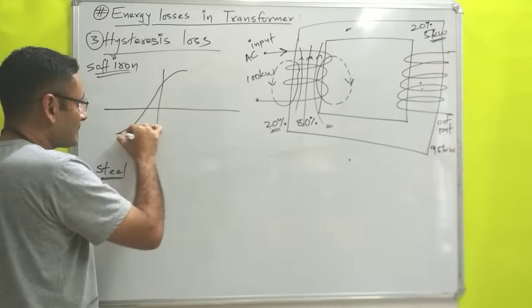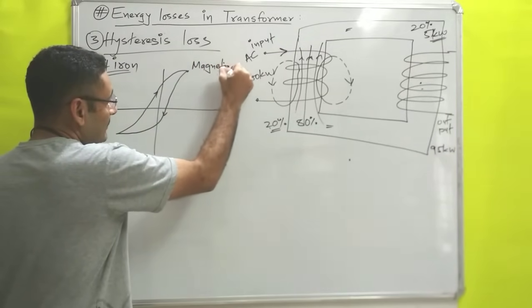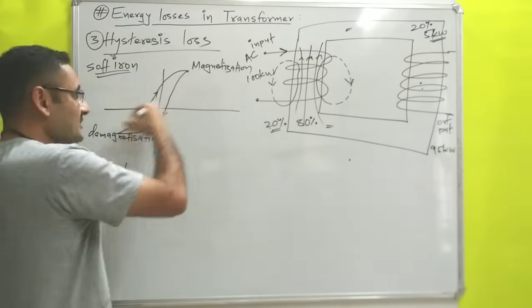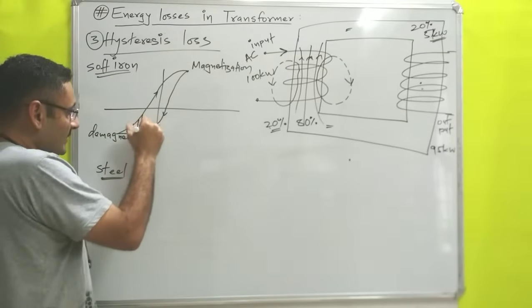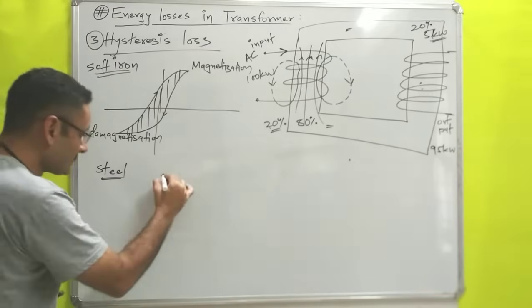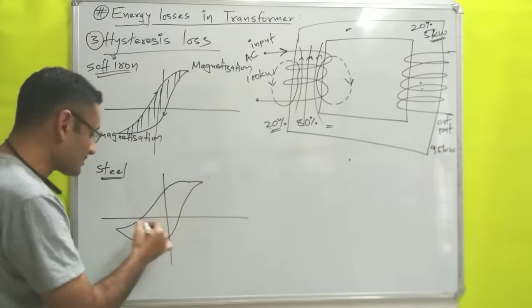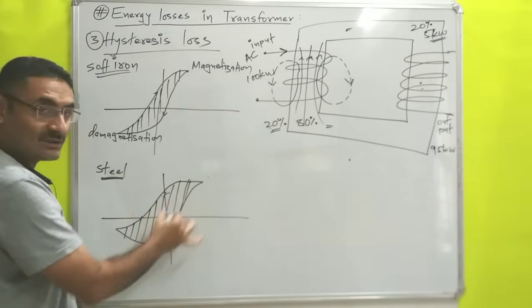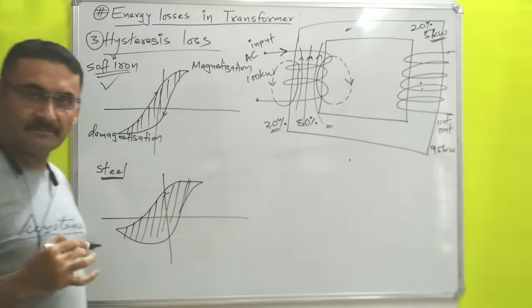We will draw the hysteresis loss diagram. In one direction that represents magnetization, and the other represents demagnetization. Due to the changing magnetic field lines — magnetization, demagnetization — some hysteresis loss is there. The hysteresis loss is represented by the area covered by this diagram. For steel, the area of the hysteresis loop is larger, meaning more hysteresis loss. For soft iron, the area is smaller, meaning less hysteresis loss. From the figure, we can say that in the case of steel, more hysteresis loss is there compared to soft iron, and that is why to minimize hysteresis loss we use soft iron as the core material.